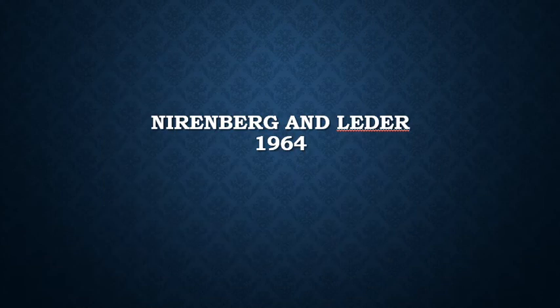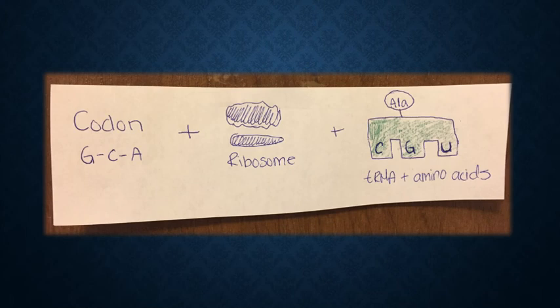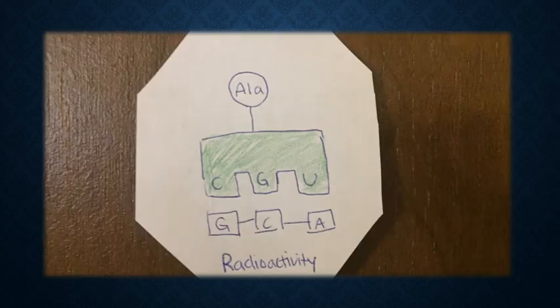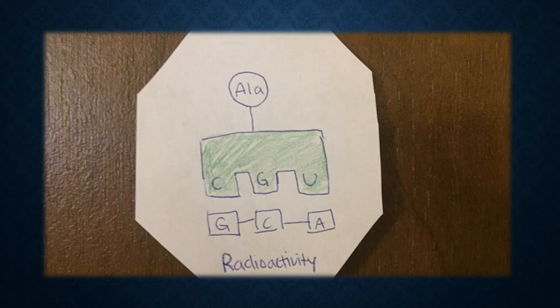This is where Nirenberg and Leder's experiment comes in. They put one specific codon, in this example GCA, ribosomes, and tRNA that are attached with various amino acids through a filter. The filter is designed to filter out unbinded tRNA and leave the binded tRNA on top. In our example, the codon GCA will bind with the ribosome and its corresponding tRNA and amino acid, which is CGU-alanine.